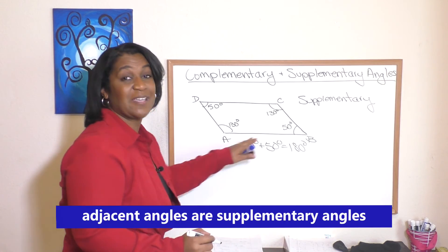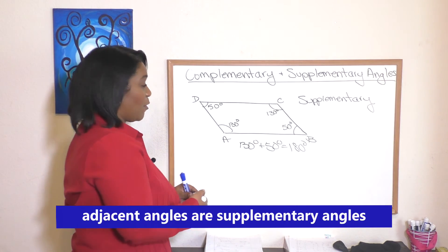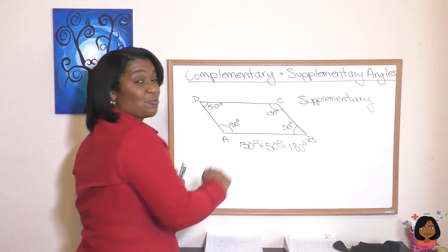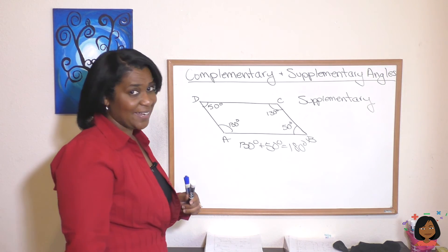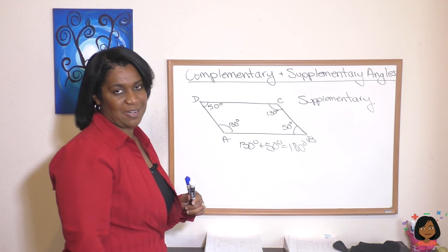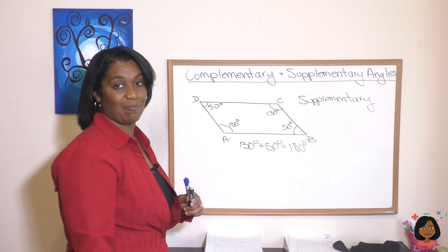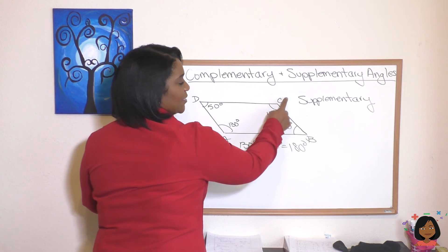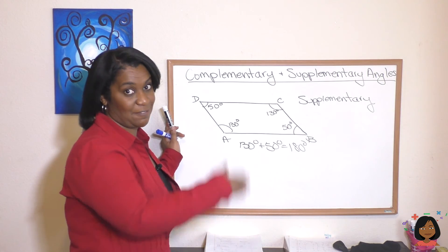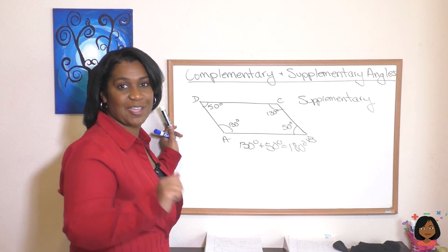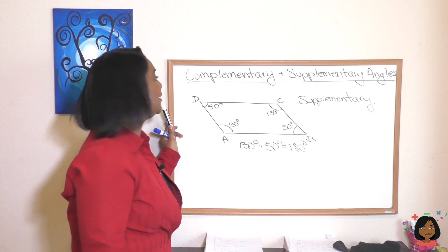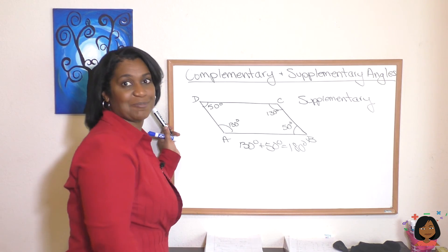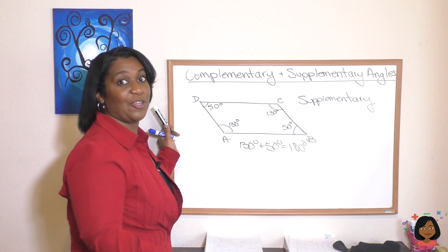Do you see any other supplementary angles in this parallelogram? I hope you do. Yeah, look at B and C, they also add up to 180 degrees. They form that straight angle so they are supplementary. And C and D add up to 180 degrees so they are supplementary.